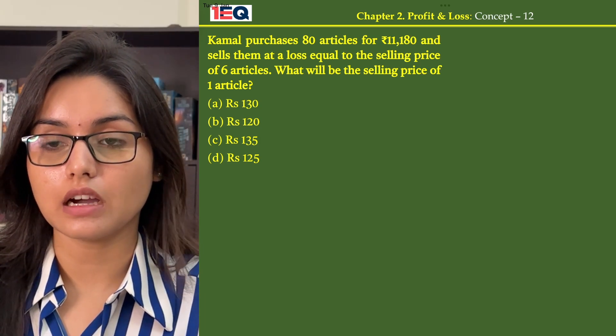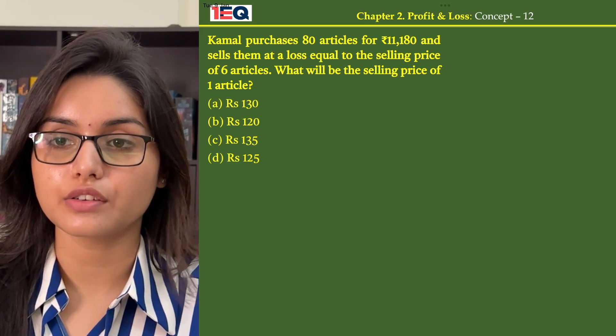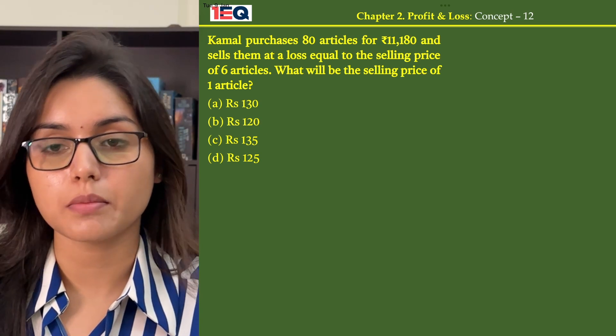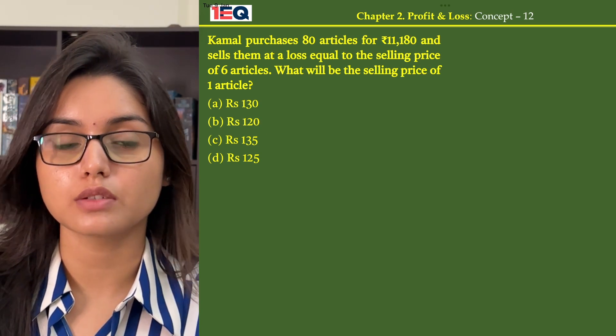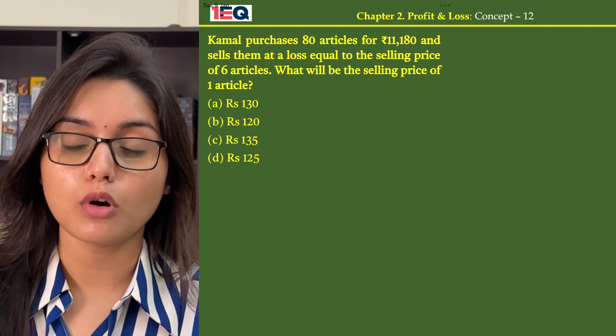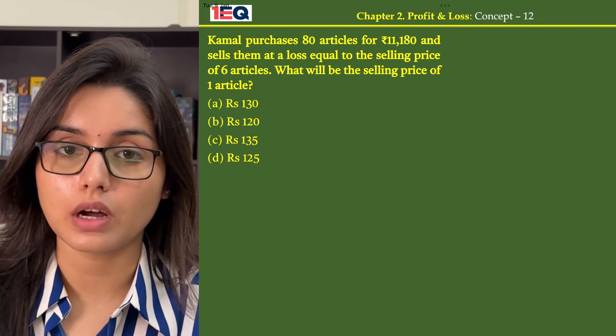Kamal purchases 80 articles for 11,180 and sells them at a loss equal to the selling price of 6 articles. What will be the selling price of one article?